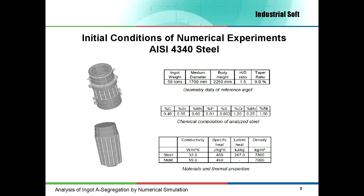Here is an example of a typical mold assembly and ingot I take as input data for the solidification simulation software. In the first table is the geometry data of the analyzed ingot. The H-D ratio is defined as the ratio between body height and medium diameter. The ingot taper is defined as the ratio between the difference of diameters at top and bottom and the height of the body. In the next table is the chemical composition of the steel used to calculate the critical value alpha, and in the last table are the thermophysical data of the analyzed system.